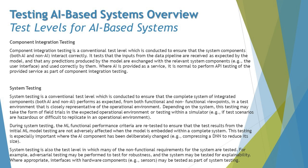Component integration testing is a conventional test level concerned with interfaces between components. It is conducted to ensure that system components — both AI and non-AI — interact correctly. It tests that inputs from the data pipeline are received as expected by the model, and that any predictions produced by the model are exchanged with relevant system components, such as the user interface, and used correctly.